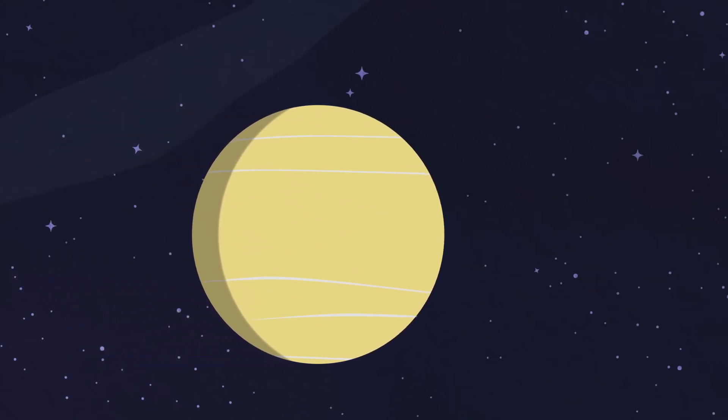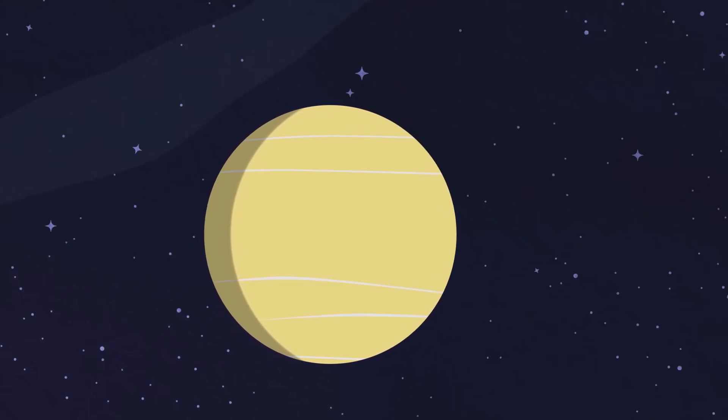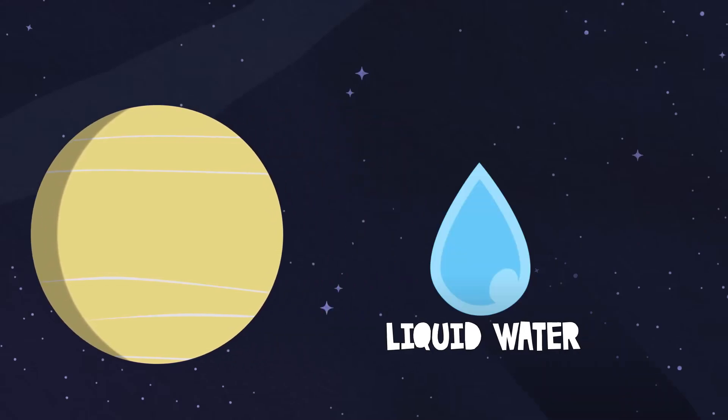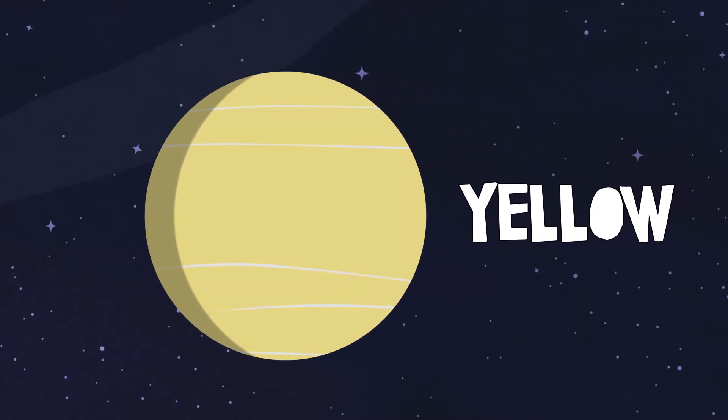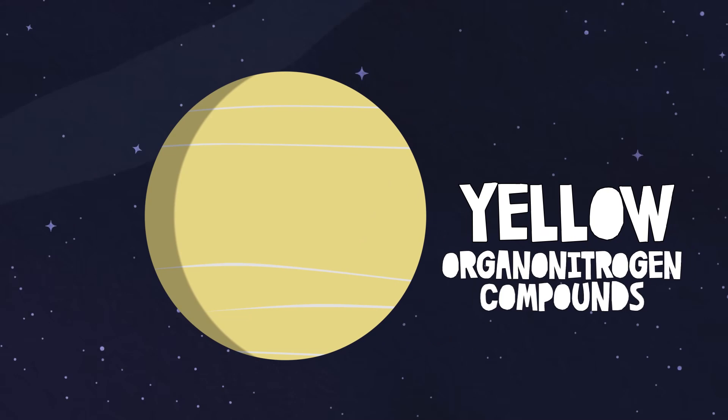I'm the only moon to have its own atmosphere, which means there might be liquid water on my surface over here. My surface is yellow, because of the organonitrogen compounds on my atmosphere you see.